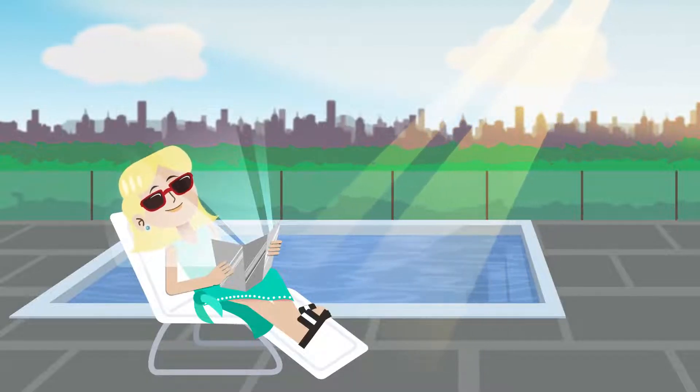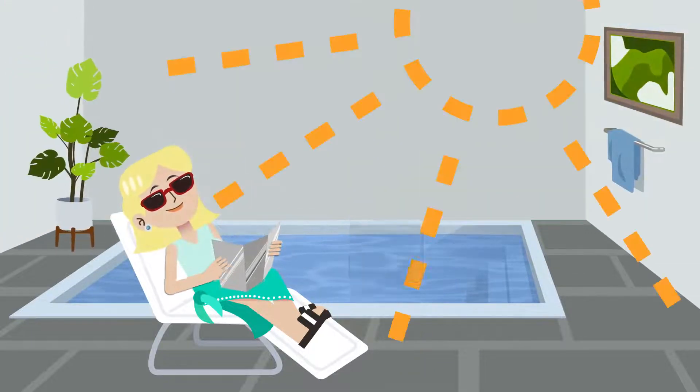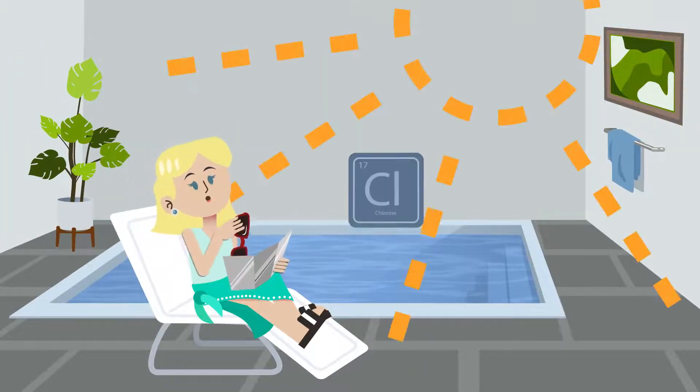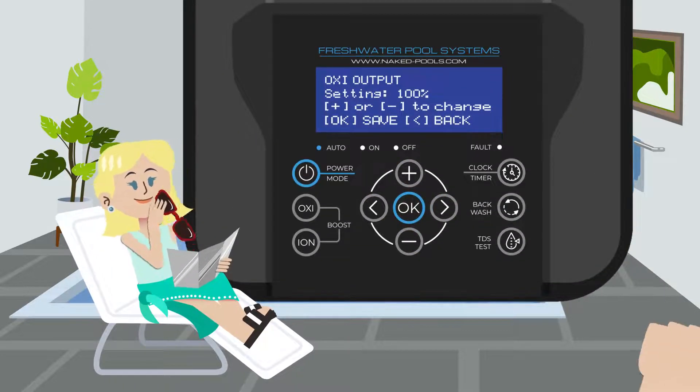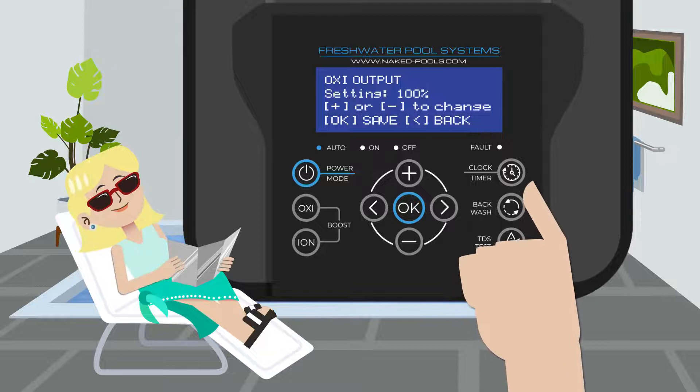Pools that are indoor or undercover won't get direct sunlight, which is a main factor in removing chlorine from the water. It may be necessary to reduce the oxy output by as much as 50% or more.